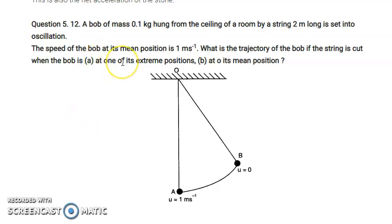The speed of the bob at its mean position is 1 meter per second. At the mean position, the speed is maximum. In terms of energy, at the mean position the potential energy is zero and the kinetic energy is maximum, because velocity is maximum there.